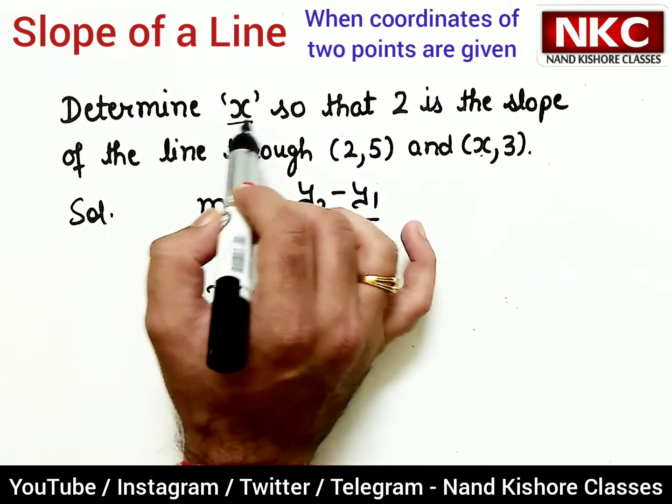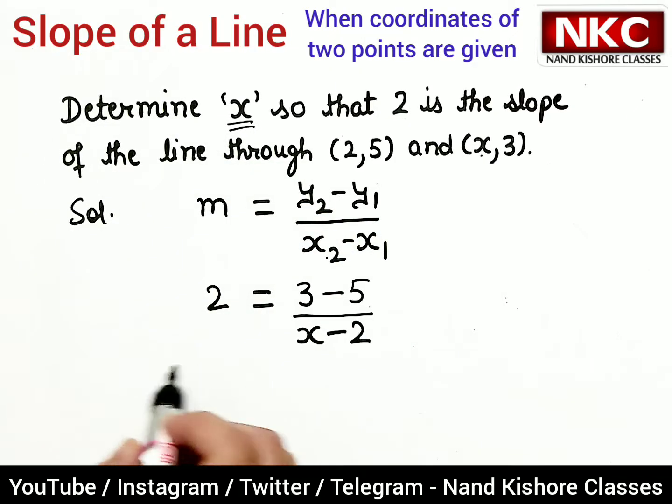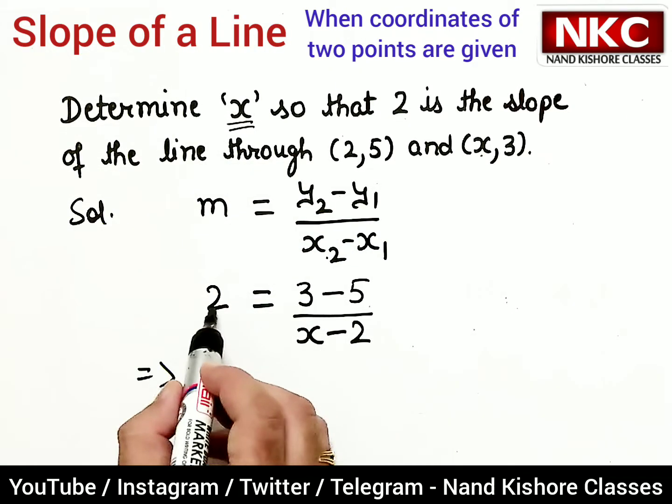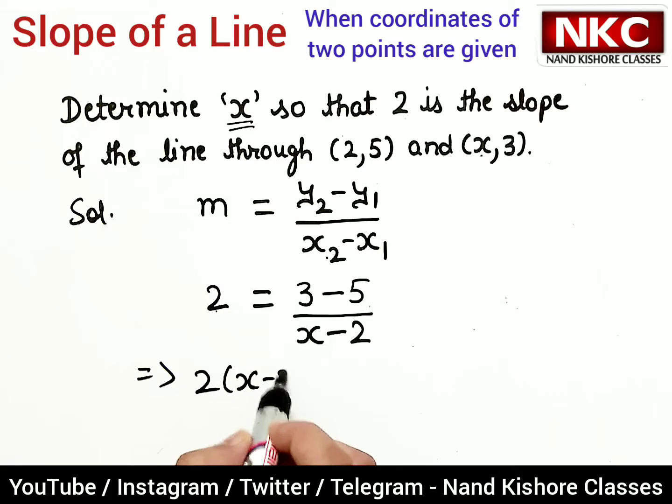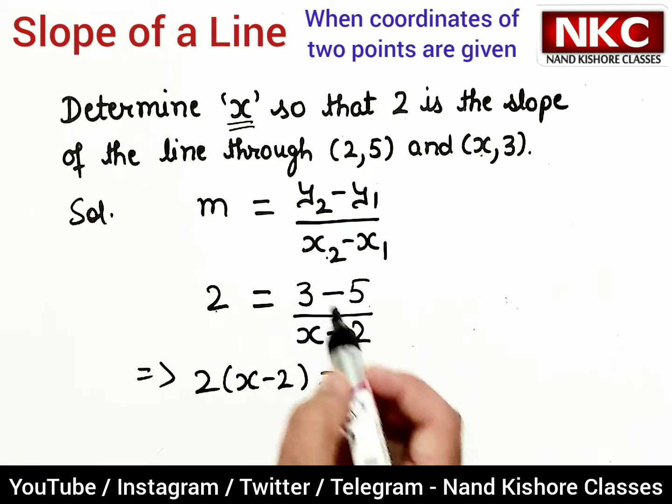x minus 2 will be multiplied by 2, and 3 minus 5 will be minus 2. What we can do now: it is 2x minus 4 equals minus 2.